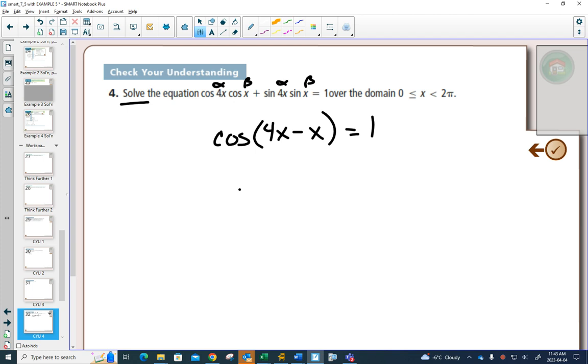And those are like terms, so I can simplify this to cos 3x equals 1. So I started off the question without knowing what I would do. I looked for patterns. I noticed one of my formulas. I changed it.